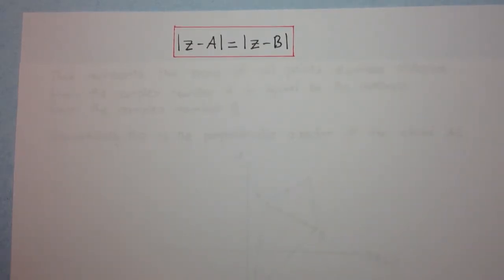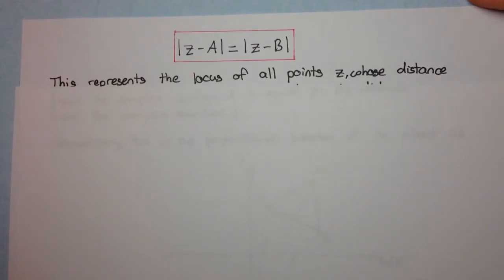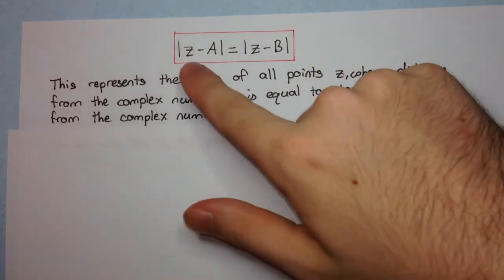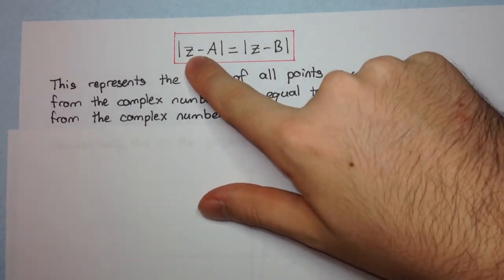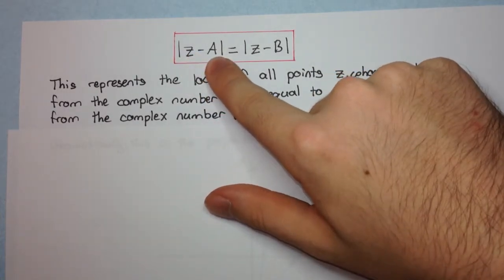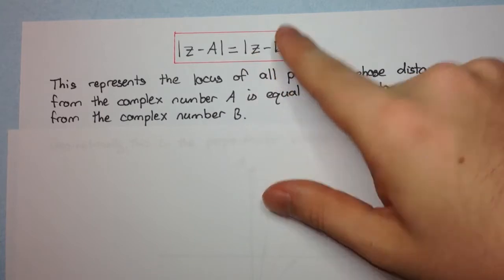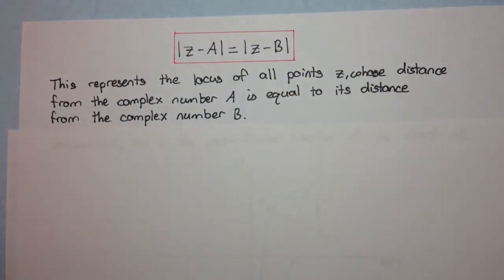Okay, so once again, this is the mathematical statement. What does it mean in terms of an English sentence? Well, this represents the locus of all points z whose distance from the complex number a is equal to its distance from the complex number b. This expression here represents the distance of z from a, and this one represents the distance of z from b. Remember, the modulus is the distance of the vector, or the length of the vector.